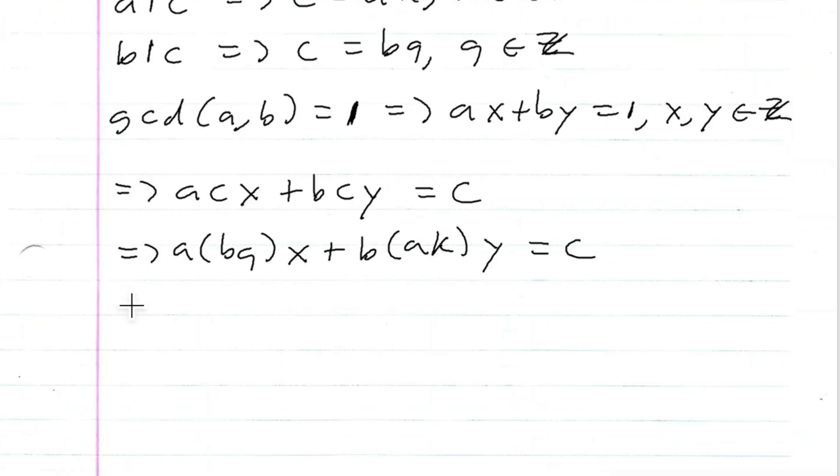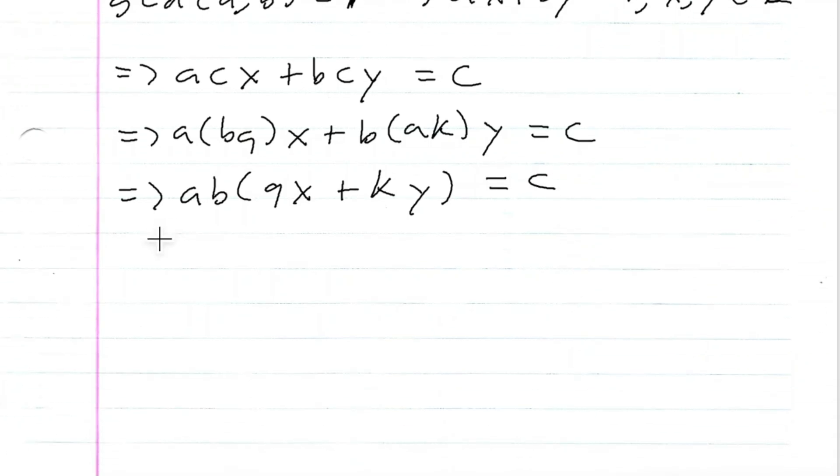For both of these, I can factor out an AB. So I'll have AB times QX plus, if I factor out an AB from here, it would be KY, is equal to C. I can see that QX plus KY is an integer, so I have AB times an integer is equal to C, so this means that AB divides C.